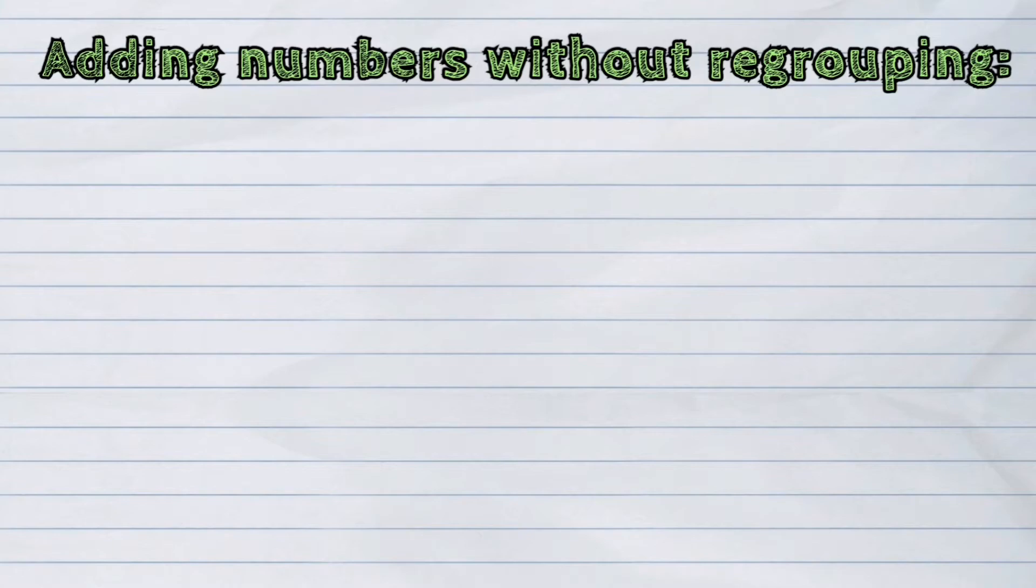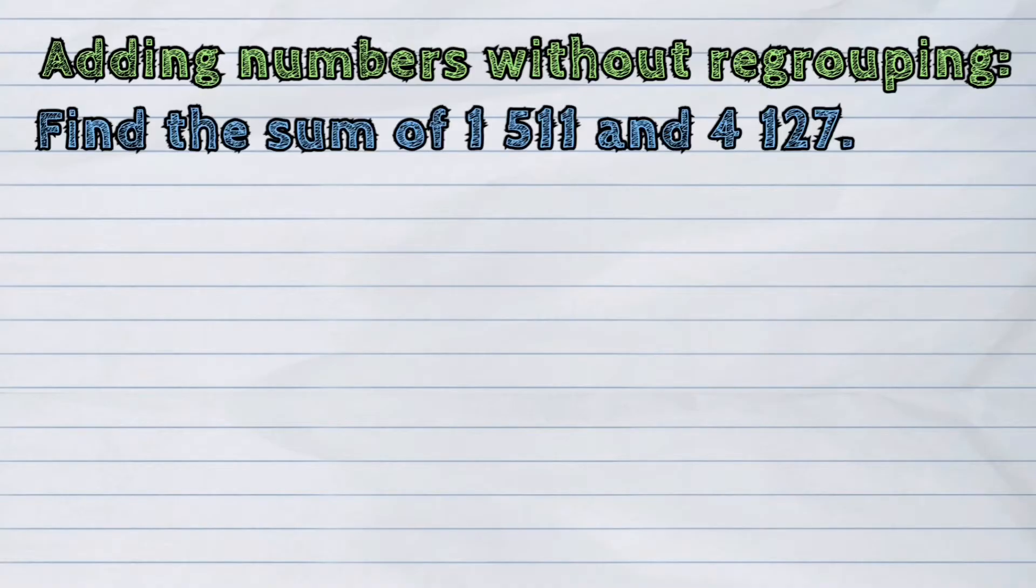Let us now learn how to add numbers without regrouping. Let's take this example. Find the sum of 1511 and 4127.